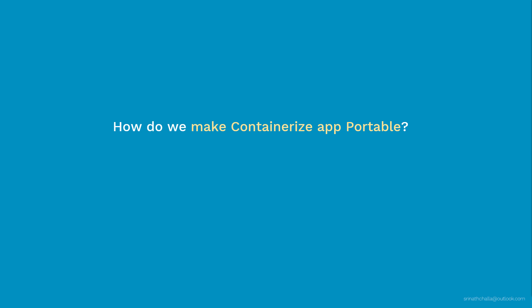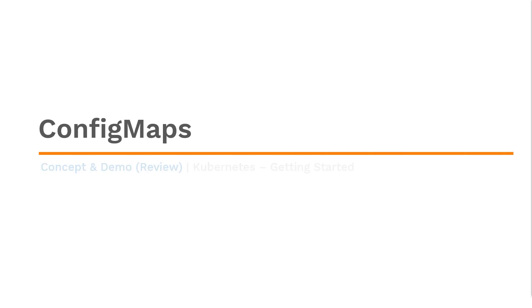Let's assume that you are building a containerized image to share with other teammates or with the open source community. It's very common to have a custom application configuration unique to each organization or each environment. So how do you make this containerized app portable? Hello and welcome to ConfigMaps. My name is Sreena Achalla, and I'm a certified Kubernetes administrator.